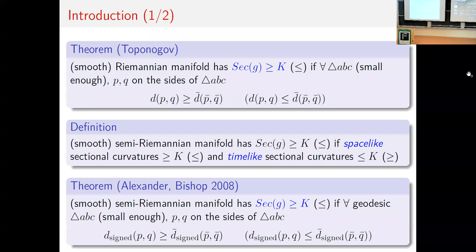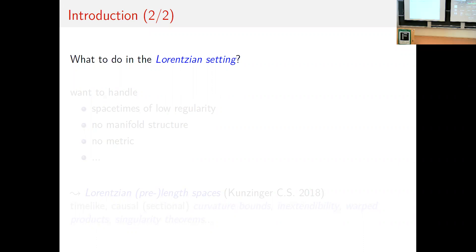In the metric case, the Toponogov theorem was the starting point of Alexandrov and CAT(k) spaces, because the sectional curvature bound condition makes complete sense for metric spaces. But here we have triangle comparison for semi-Riemannian — in particular Lorentzian — manifolds, which is not a metric in the sense of metric spaces. So what to do? That's where our approach to synthetic Lorentzian geometry comes in.